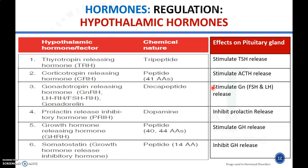The ultimate hormonal release is regulated by the hypothalamus through different hypothalamic hormones. The first is thyrotropin releasing hormone (TRH) — TRH released from the hypothalamus stimulates the pituitary gland to produce thyroid stimulating hormone (TSH), and TSH then stimulates the thyroid gland to produce thyroid hormone.